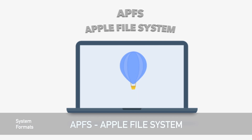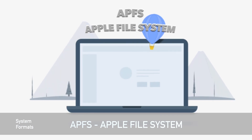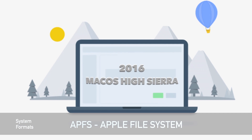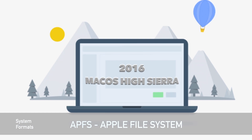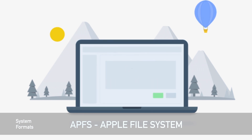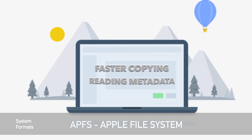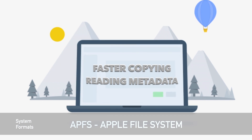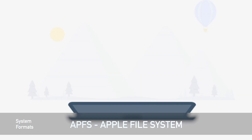APFS, or Apple File System, is one of the new features introduced in macOS High Sierra. It was first released in 2016 and it offers all sorts of benefits over macOS Extended, the previous default. For one thing, APFS is faster — copying and pasting is much faster, and reading metadata is quicker. For example, if you need to find out how much space a folder is taking up on your drive, it will be much faster.